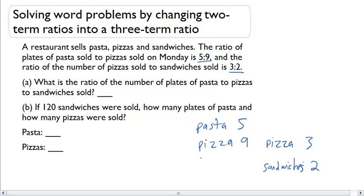I want to write this now as a ratio that has all three of these together. The only problem is I don't have them in the same terms. So what I need to do is figure out how can I get pizza to be the same number in both ratios.